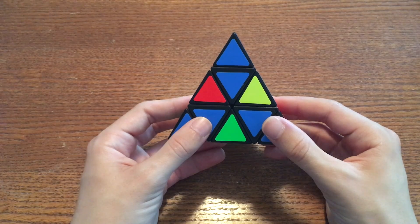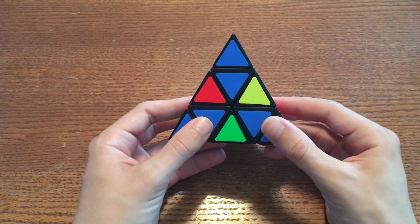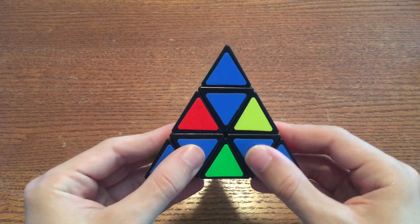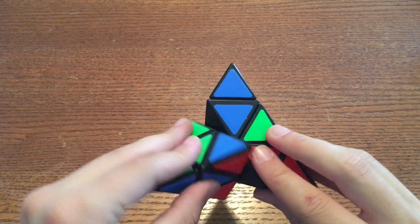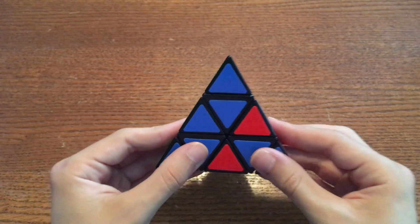To solve the edges, you will need to learn one algorithm that has four moves. Horrible, I know. It goes like this. Side A goes down, side B goes down, side A goes up, side B goes up. That's it.